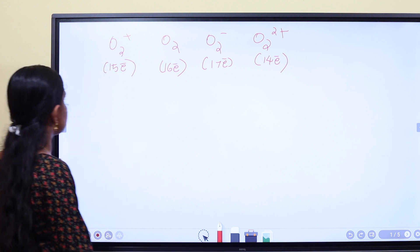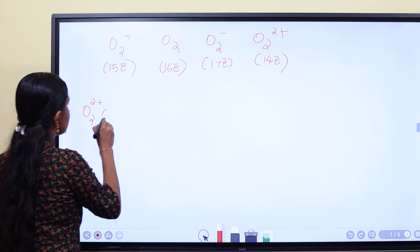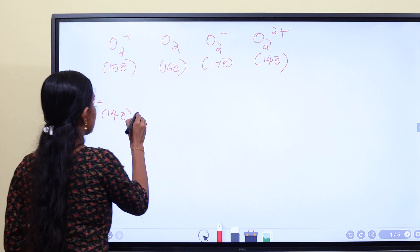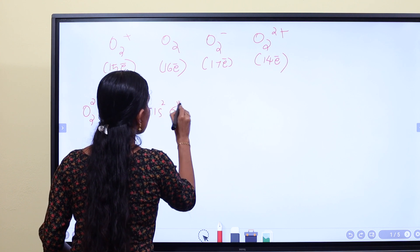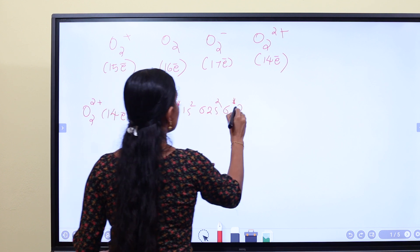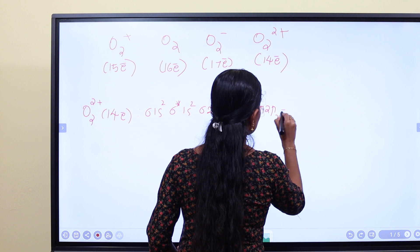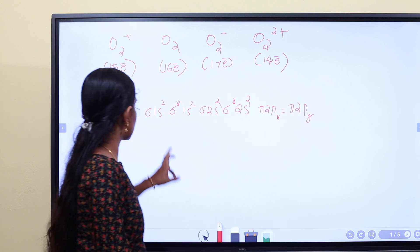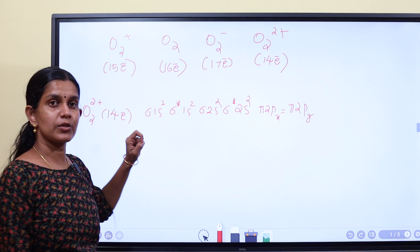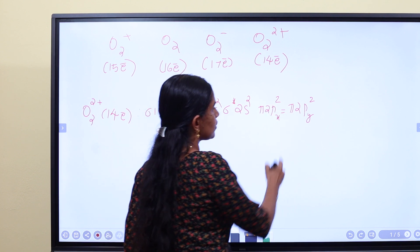Now we have the order. For O2²⁺ with 14 electrons, we are in the up-to-14 case. The filling is: sigma 1s², sigma star 1s², sigma 2s², sigma star 2s² — that is 2, 4, 6, 8 electrons. Then pi 2px² equals pi 2py², giving 10, 12, 14 electrons. So we have 14 electrons with the pi orbitals filled.